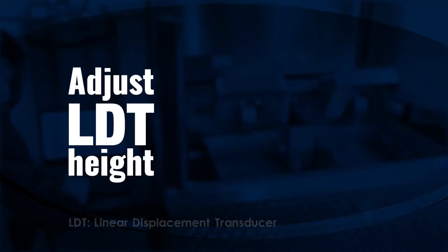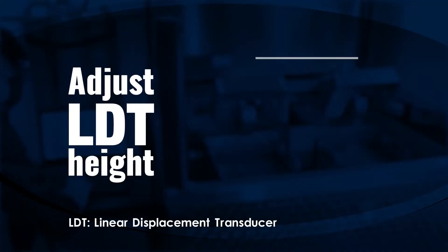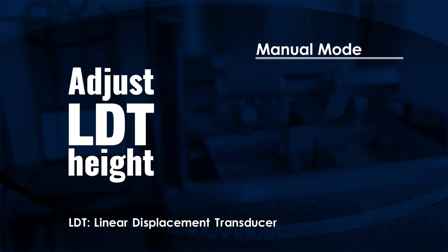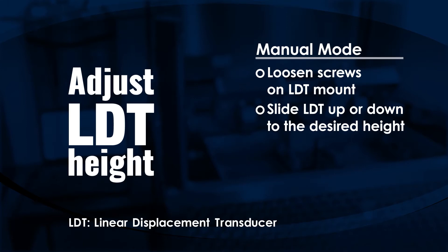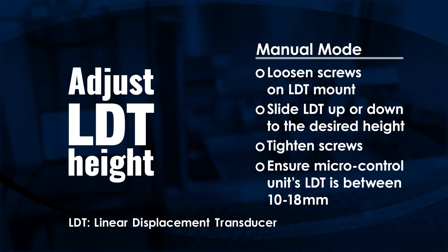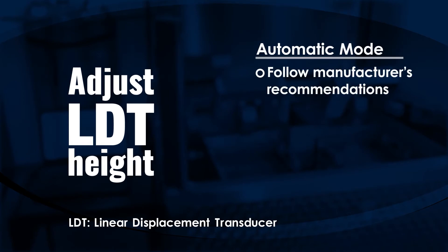Adjust the height of the specimen tray following manufacturer recommendations and secure by hand tightening the bolts. Adjust the LDT height to obtain the height readings. For manual mode, loosen the two screws on the LDT mount and slide the LDT up or down to the desired height, then tighten the screws. Ensure the micro control unit's LDT reads between 10 and 18 millimeters. For automatic mode, follow the manufacturer's recommendations.